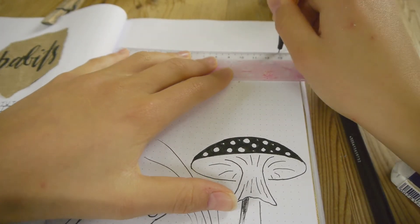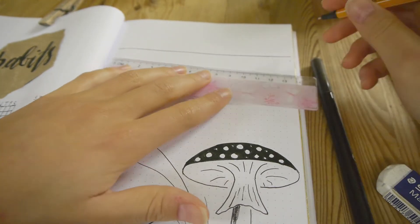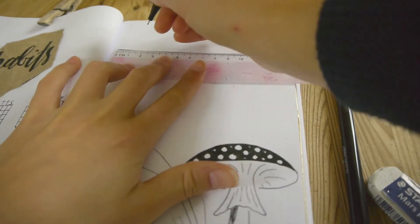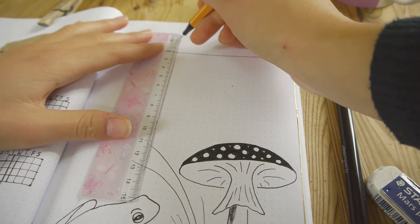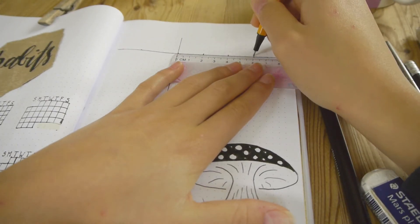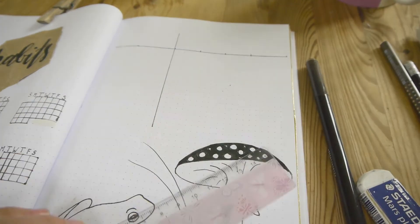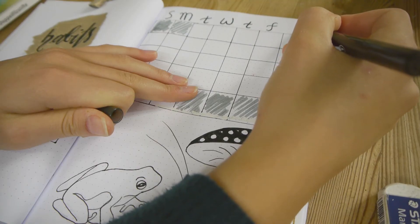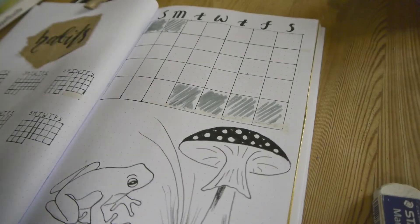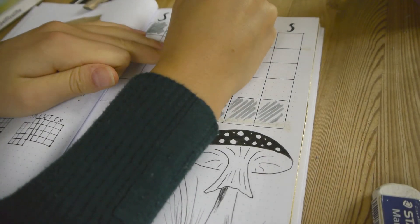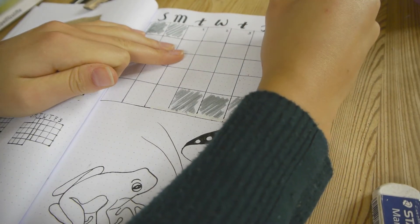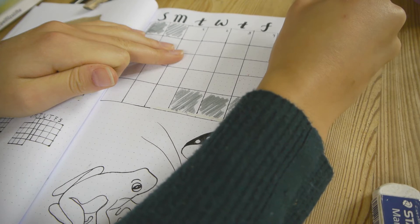In my little sketch I'll put the monthly overview like so and I'll put the initials of each day above that.